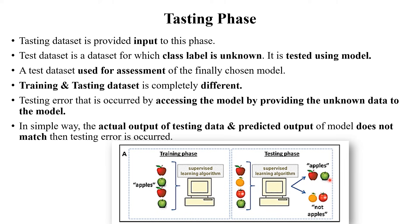In the testing phase, you use the remaining dataset. If you pass apple images to the machine, it gives you a proper result. But if you provide the image of an orange or a mango, the machine doesn't generate a result — it shows that it is not an apple — because you trained the machine only on apple images, not other images. This is the testing phase. In the testing dataset, the class label is unknown. In training we provide the label and the image, but in testing you provide only the image, and the machine matches those images with its training images to generate a result.